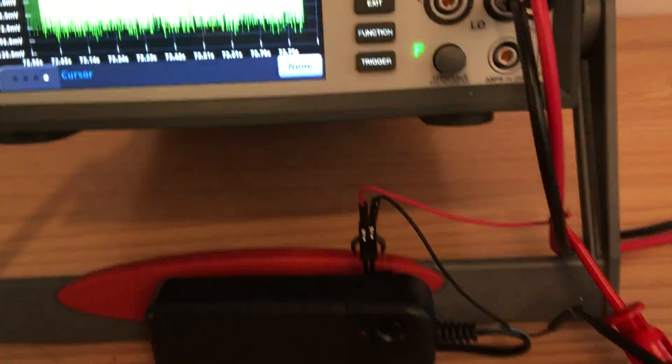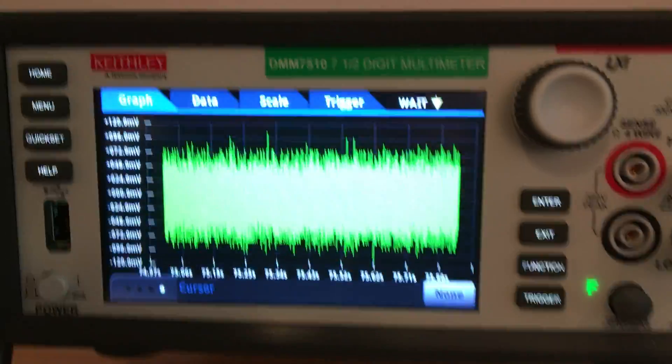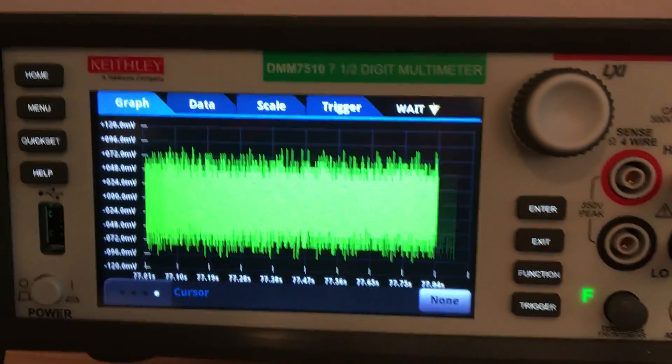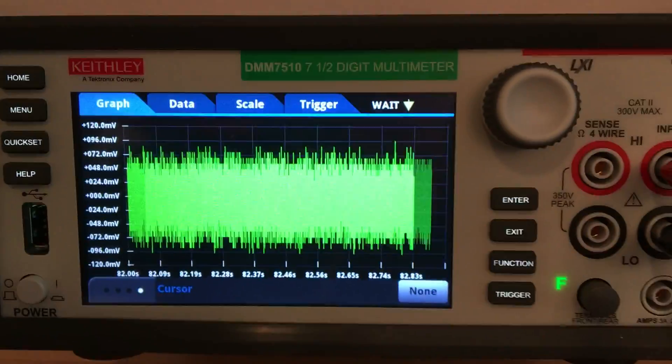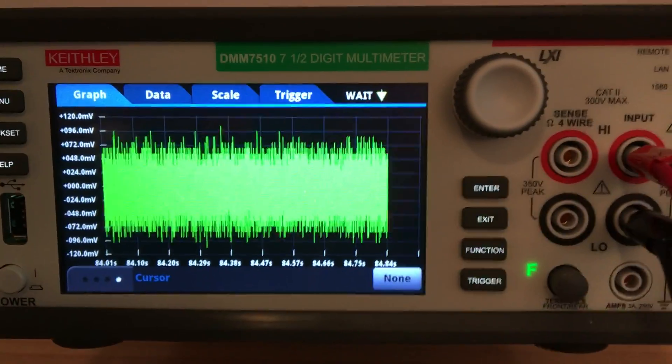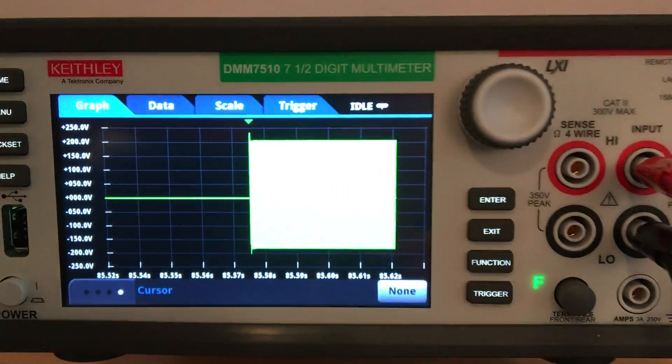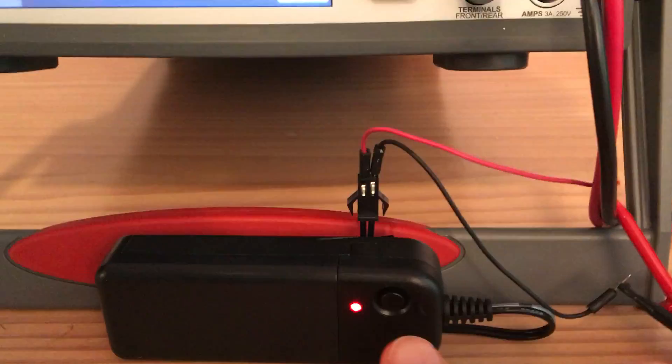So what we have now is we're just measuring noise off the inverter. There's no output. I'm going to turn the converter on, and I have the 7510 set to trigger at 100 volts. So we're going to turn the unit on and the 7510 is triggered. You can see the unit's on.